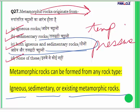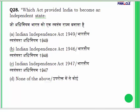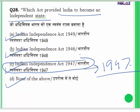Question 28: Which act provided for India to become an independent state? Options are the Indian Independence Act of 1949, 1946, 1947, or none of the above. We became independent in 1947, and this itself is the answer. The answer is C — Indian Independence Act of 1947.